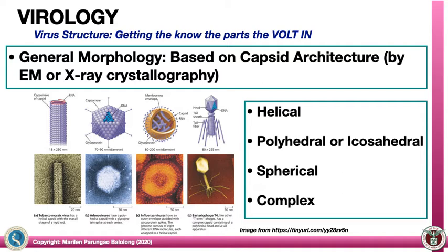The general morphology of viruses can be categorized based on capsid architecture, which you can view by electron microscopy or X-ray crystallography. So far, four capsid architectures have been described: helical, polyhedral (sometimes referred to as icosahedral), spherical, and complex.